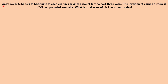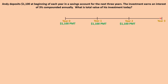Now let's look at a present value question. Andy deposits $1,100 at the beginning of each year in a savings account for the next three years. The investment earns 3% compounded annually. What is the total value of his investment today? This is a simple annuity due question where we're calculating present value. First, let's draw the timeline: year zero to year three, with $1,100 invested at the beginning of each year, interest at 3% compounded annually.